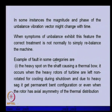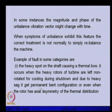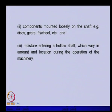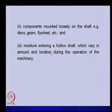If the magnitude and phase of the unbalanced vibration are changing with time, then it is not a balancing problem — it is a different problem. Examples of faults in such a category include a heavy spot on the shaft causing a thermal bow, which occurs when heavy rotors of turbines are left non-rotating for cooling during shutdown. Due to heavy sag, a permanent bent configuration results. Even axial asymmetry of the thermal distortion can cause this behavior.